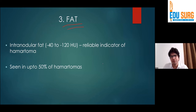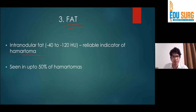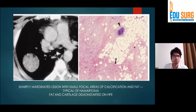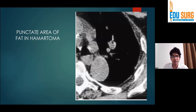The presence of fat is also an important determinant. Generally, intranodular fat is seen in hamartomas — about 50% of hamartomas have intranodular fat present. This is an example of a hamartoma which is a sharply marginated lesion and has some element of fat and calcification. You can see the fat elements here. Areas of punctate fat are again seen in hamartoma.